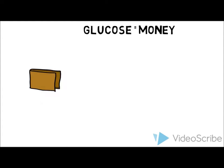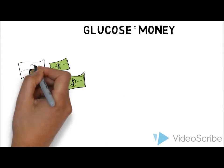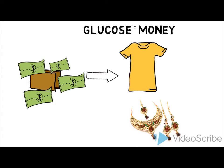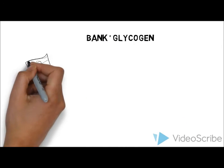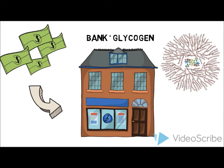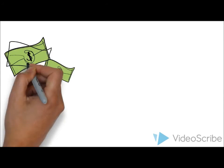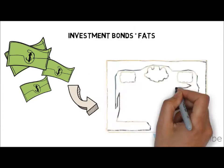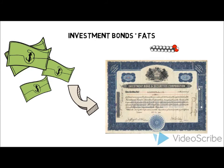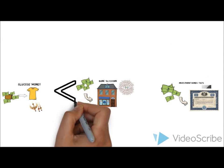Think of glucose as money that you keep inside your wallet. It's very easy to spend because it's immediately available, and you can use it without much hassle to buy shirts or jewelry or whatever you like. But if you decide to save that money into a savings account at the bank for later use, that would be like glycogen. You can take this money even further by investing it into a security bond or a company or a firm, which in our analogy would be like creating fats from glucose.